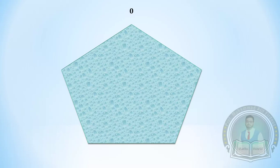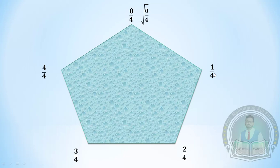We start with the numbers zero, one, two, three, and four. The next step is to divide each number by 4: 0/4, 1/4, 2/4, 3/4, and 4/4. Then take the square root of each: √(0/4), √(1/4), √(2/4), √(3/4), and √(4/4).